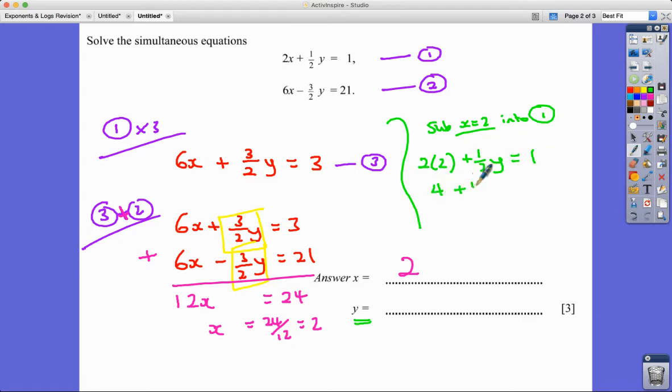That means that 4 plus a half of Y equals 1. If I take away 4 off both sides, I get a half Y is negative 3. And double everything, I get Y equals negative 6. So that's my value of Y. And you can put those things back in and check that they work. I'm pretty sure they do. And that's your three marks.